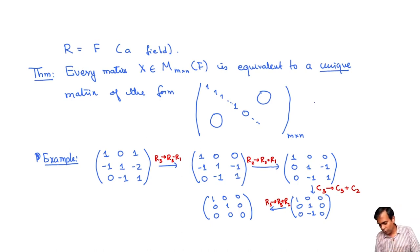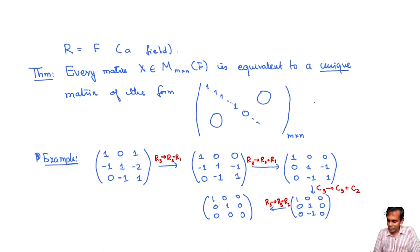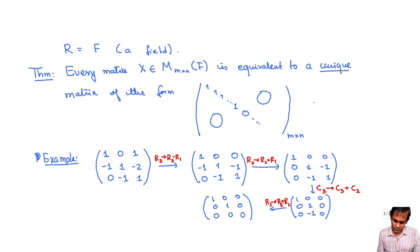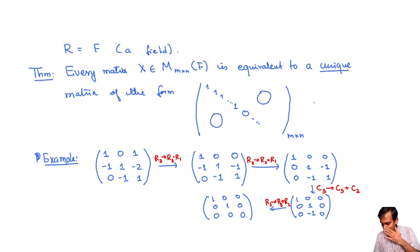So what we've done is started with a general matrix and by a series of row and column operations reduced it to the desired canonical form. This process follows a systematic algorithm.